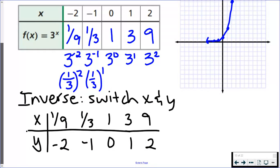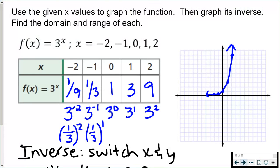So you can see that I just switched the x's and y's in every one of my points. So instead of negative 2 comma 1 ninth, I'm going to have 1 ninth comma negative 2. So I did that all down the row. So if I were to plot all of those points, this is what the graph is going to look like.